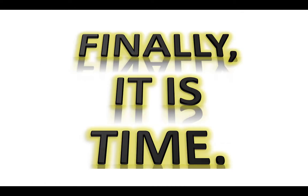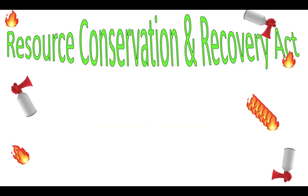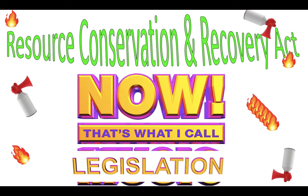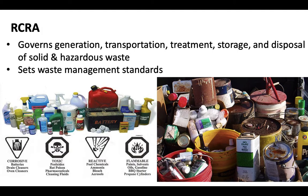The Resource Conservation and Recovery Act — RCRA — governs the generation, transportation, treatment, storage, and disposal of solid and hazardous waste. This includes household items like bleach, hairspray, motor oil, glue, old light bulbs, car batteries, gasoline, pesticides, and fungicides — pretty much any toxic or hazardous chemical you might have at home. RCRA sets standards for managing that waste.